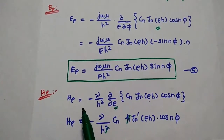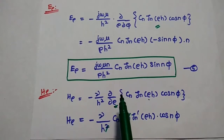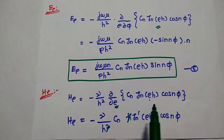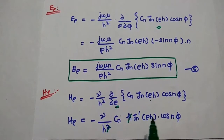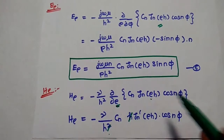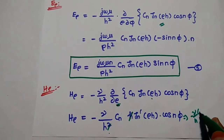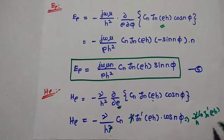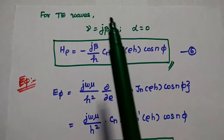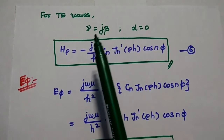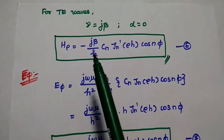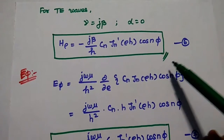Next we find H_rho, which is equal to minus gamma by H² times (dou / dou rho) of Cn * Jn(rho*H) * cos(n*phi). We differentiate with respect to rho and get H * Jn'(rho*H), where the dash represents the first-order differentiated Bessel function. Dividing by H, we get minus gamma/H * Cn * Jn'(rho*H) * cos(n*phi). For TE waves we assume no attenuation loss — only propagation — so the propagation constant gamma becomes j*beta. Then H_rho equals minus j*beta / H * Cn * Jn'(rho*H) * cos(n*phi). Consider this as the sixth equation.